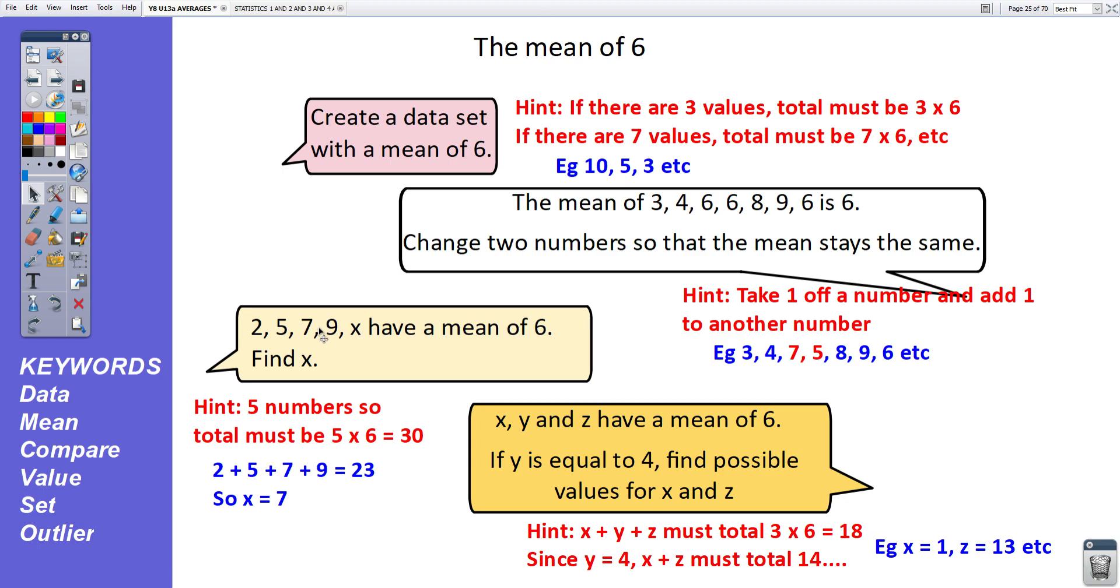Third question. 2, 5, 7, 9, and x have a mean of 6. Find x. There's five numbers in all. They've got a mean of 6, so their total must be 30. We've got four of those numbers. They total 23. So the fifth number, x, must be 7. 30 take away 23 is 7.